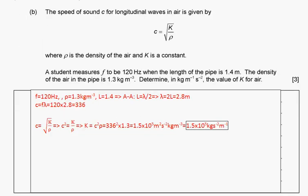The speed of sound c following a wave in air is given by c equals square root of k over ρ, where ρ is density and k is a constant. The student measures f when the length of pipe is 1.4 meters. The density of air is given. Determine the value of k.